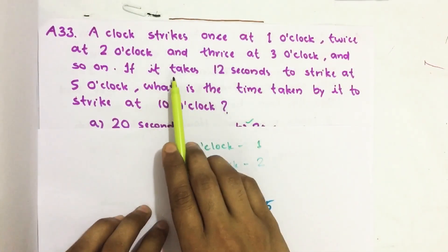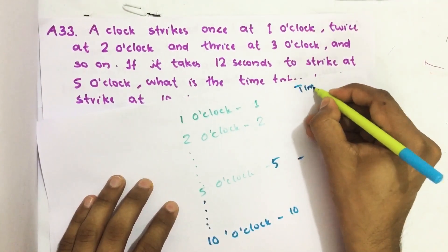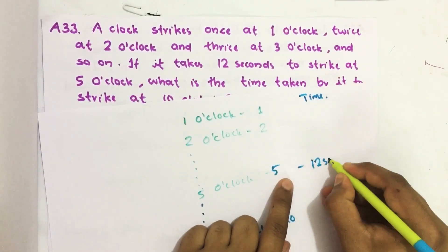Then it is given that it takes 12 seconds to strike 5 times at 5 o'clock.